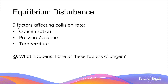Now we move on to the concept of equilibrium disturbance. In collision theory there are three main factors which affect collision rates: the concentration of reactants and/or products, the pressure and volume of the system, and the temperature of the system. The key question is: what happens to the equilibrium if one of these factors changes?